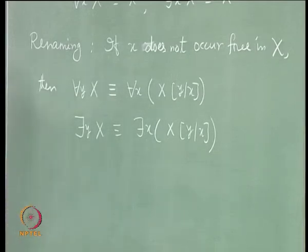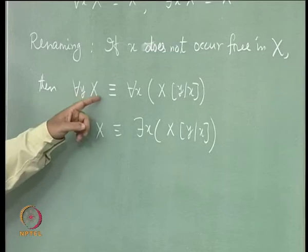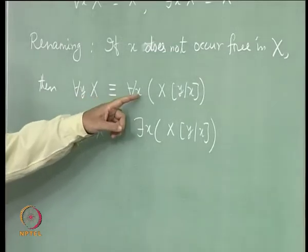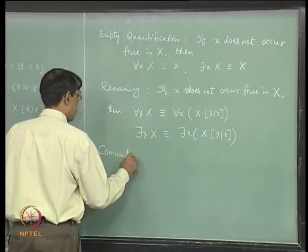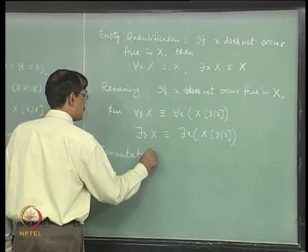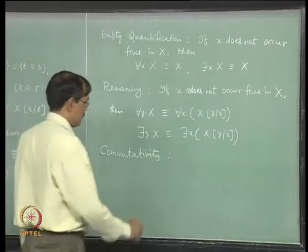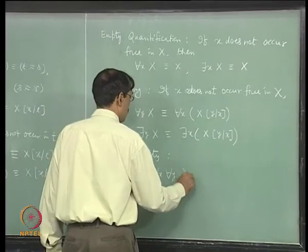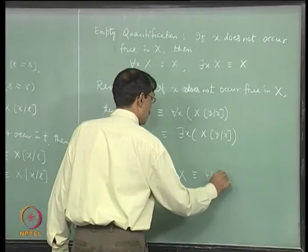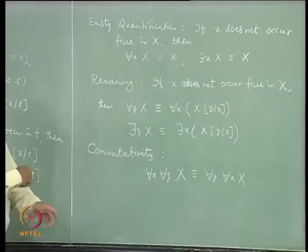In this symbolism, something is hidden. You have to read it that way: for each x, x p x, for each y p y is equivalent to for each x p x. Then you can have commutativity. This says: for each x for each y, under any formula x, that is equivalent to for each y for each x, x. You can interchange the quantifiers.